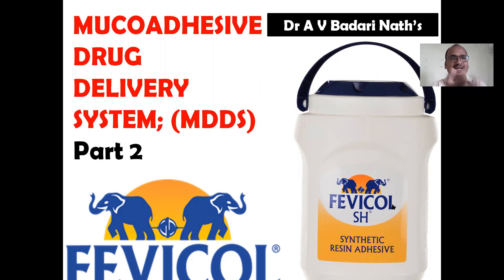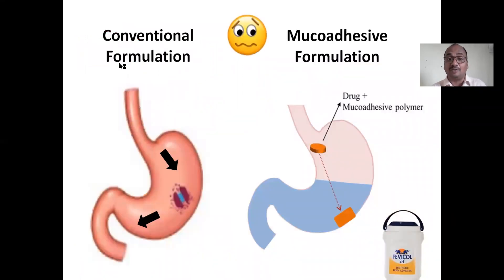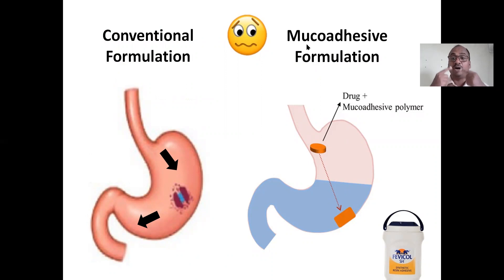In my language, I am calling the mucoadhesive drug delivery system as a 'fevicol' formulation, because the name itself indicates it is adhesive in nature. These formulations are very wonderful. The name itself indicates adhesion — these formulations are adhered to the mucous membrane. This mucous membrane is present inside right from the mouth up to the anus canal — that is the entire GIT.